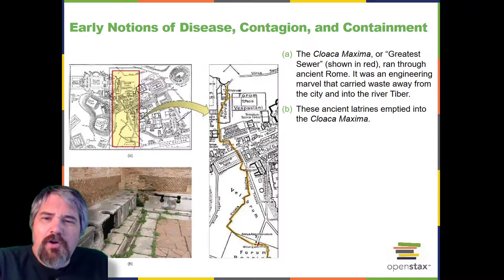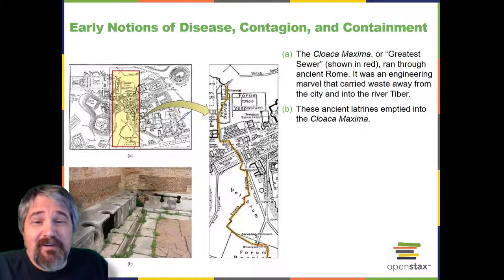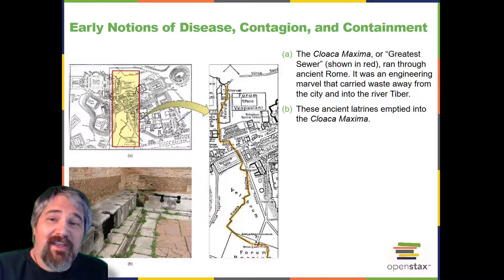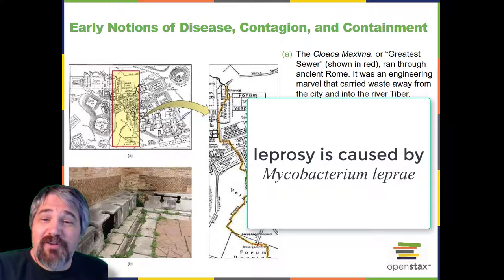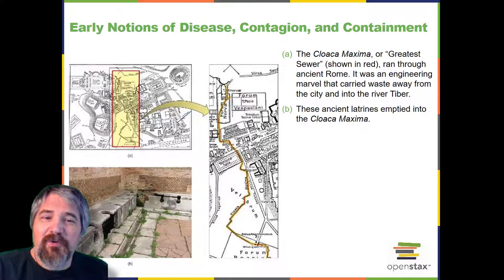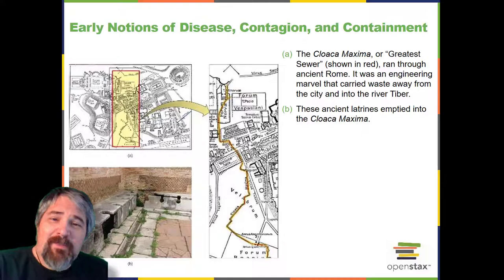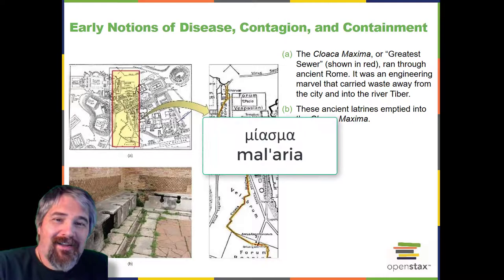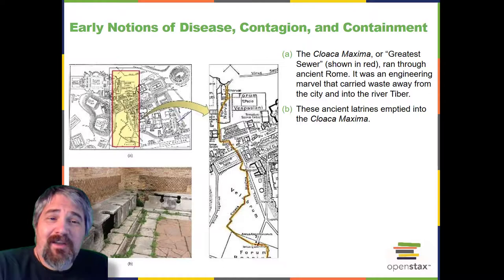Early notions of disease, contagion, and containment. Several ancient civilizations appear to have had some understanding that disease could be transmitted by things they could not see, especially evident in historical attempts to contain the spread of disease. For example, the Bible refers to the practice of quarantining people with leprosy and other diseases, suggesting that people understood diseases could be communicable. Ironically, while leprosy is communicable, it is also a disease that progresses slowly, meaning people were likely quarantined after they had already spread the disease to others.